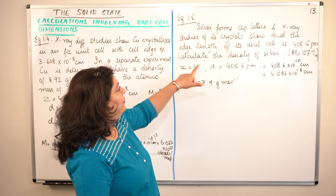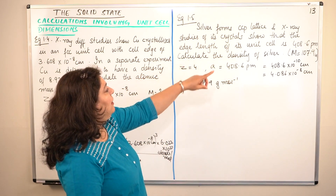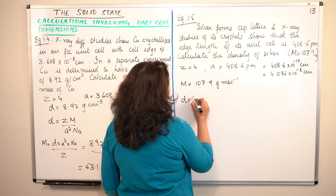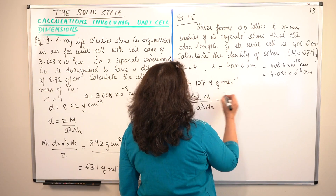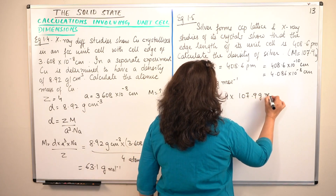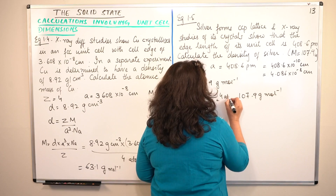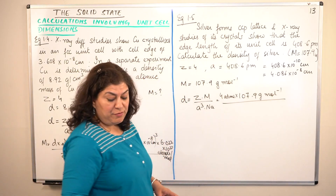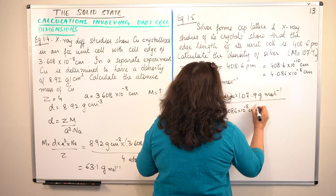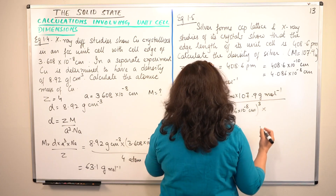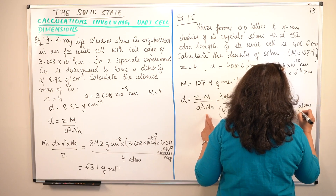Silver forms a CCP lattice giving Z = 4, and the edge length is 4.086 × 10⁻⁸ centimeter. Calculate the density. We know density equals ZM over A cube NA. Substituting values: Z is 4 atoms, M is 107.9 grams per mole, A is (4.086 × 10⁻⁸ cm)³, and Na is 6.022 × 10²³ atoms per mole.